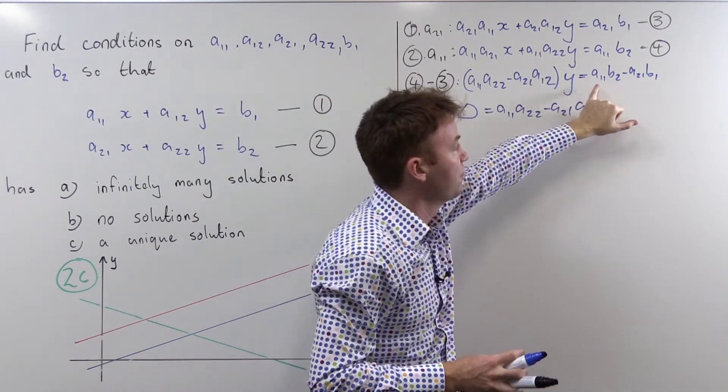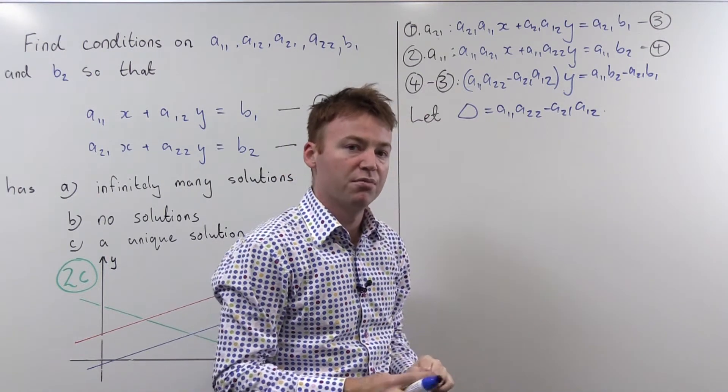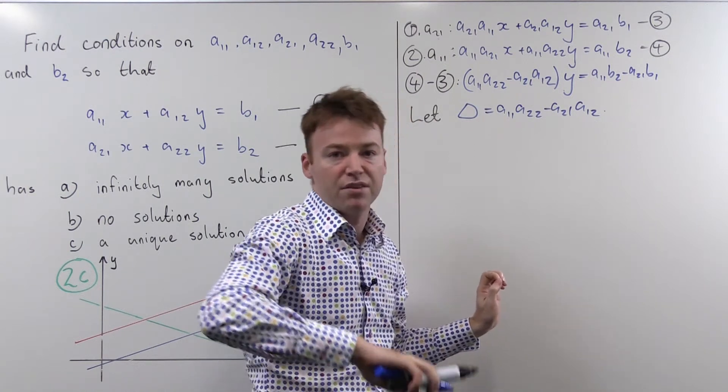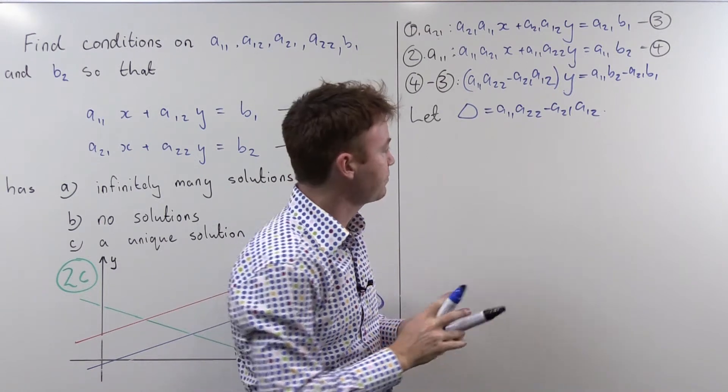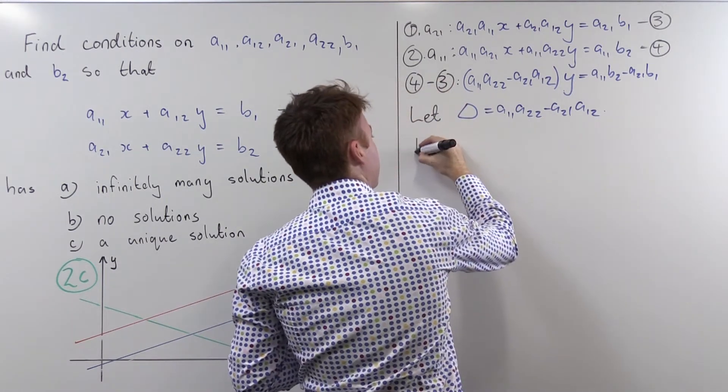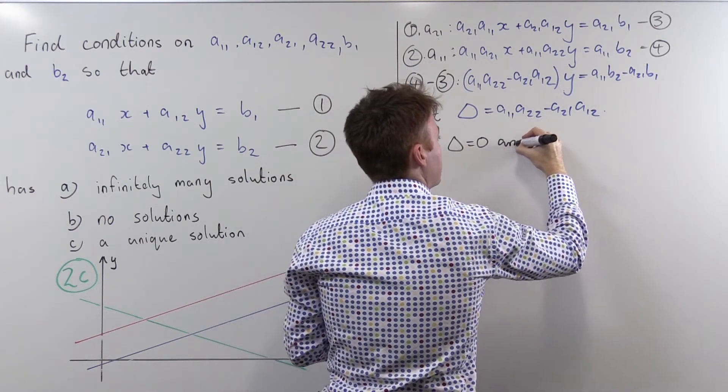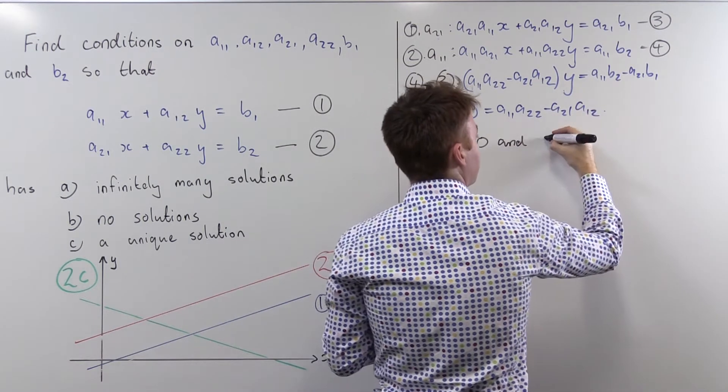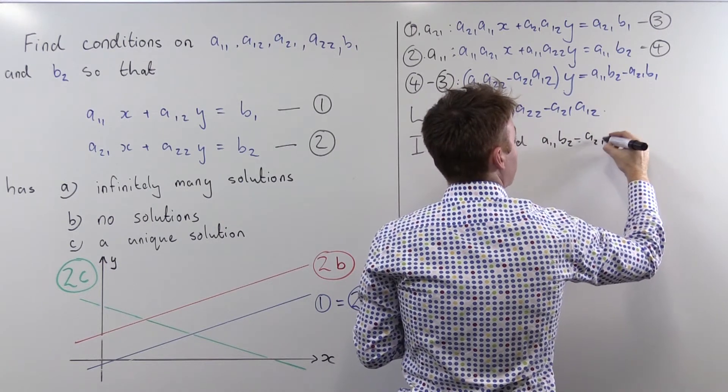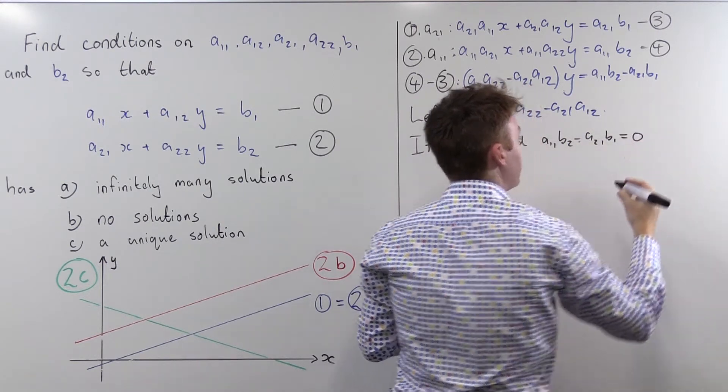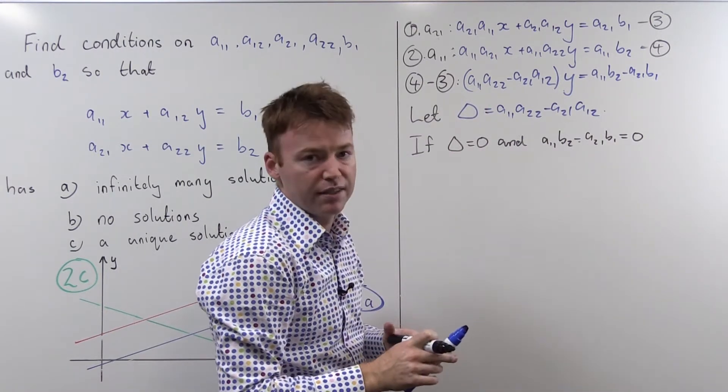If this is zero then we've got no troubles at all. In fact we've got the scenario where zero equals zero which means for all values of y and their corresponding values of x they're on both lines simultaneously. Let's write that down. If delta is zero and a₁₁b₂ minus a₂₁b₁ equals zero, then there's no restriction on y whatsoever. There are infinitely many solutions.